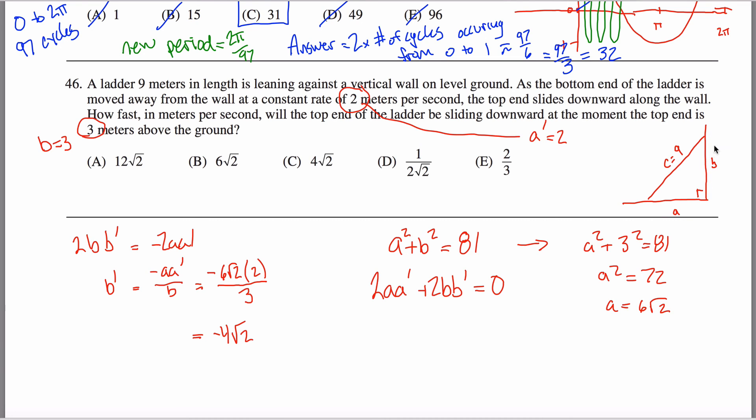That's saying that B, this length right here, is changing at a rate of negative four root two. It's getting smaller. So the rate of change is negative. But what the question is asking you is the speed that it's moving down. It's kind of asking you how fast is this getting smaller? So my answer would be four root two, which is answer C.